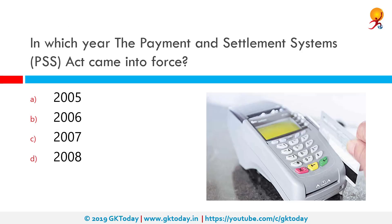In which year did the Payment and Settlement Systems Act come into force? This came into force in 2007; however, the Act and regulations framed under it came into effect from August 12, 2008. Section 2(1)(i) of the PSS Act 2007 defines a payment system as one enabling payment between a payer and a beneficiary involving clearing, payment, or settlement service, but does not include a stock exchange. All entities operating such systems are known as system providers.